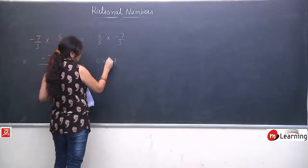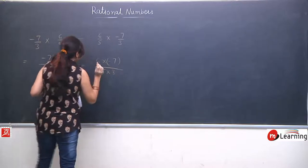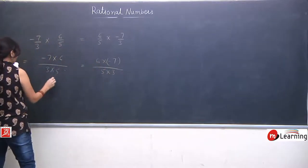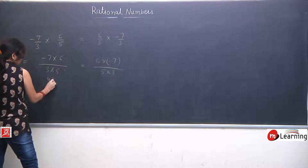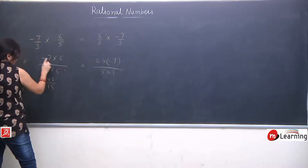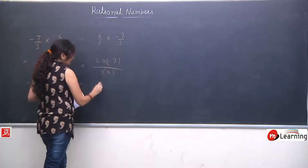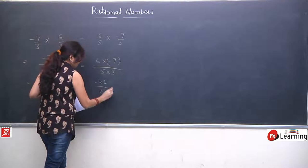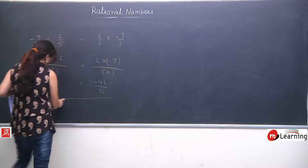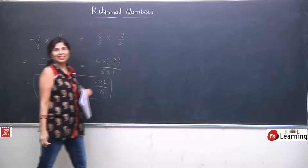Similarly for RHS, LHS aur RHS hame same milna chahiye. 7 × 6 = 42, but minus 42 because it is minus 7. Similarly 6 × 7 = 42, again we get the minus sign. LHS equals to RHS.